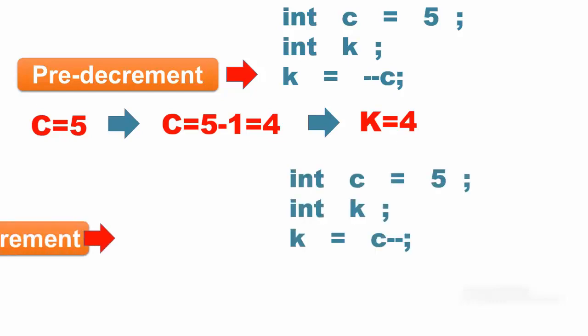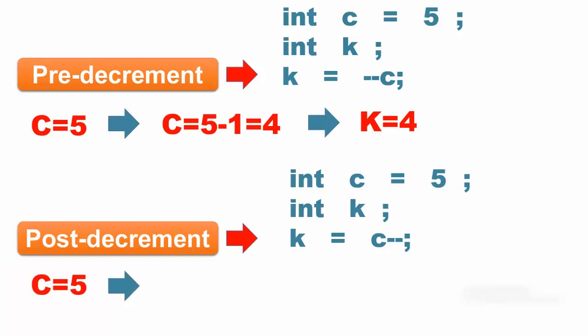This code shows the post decrement operation causes the R value of C to be fetched and its R value is assigned into K and then its R value is decremented. As a result, K equals 5 but C equals 4.